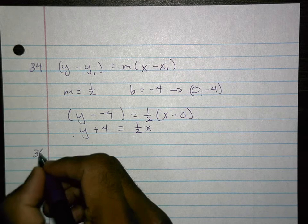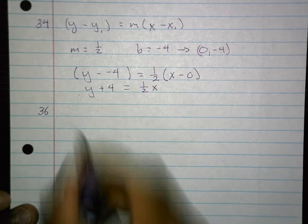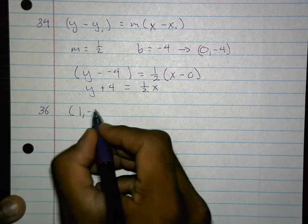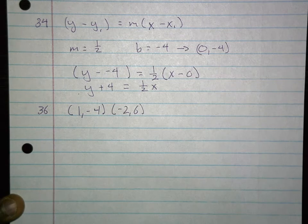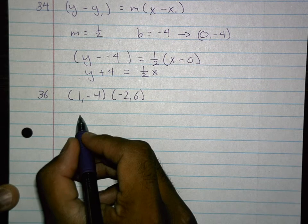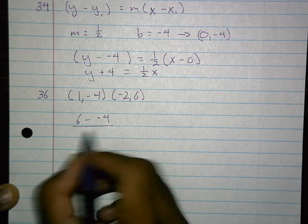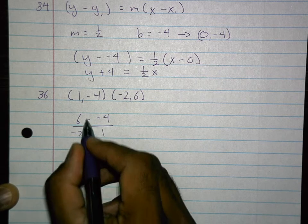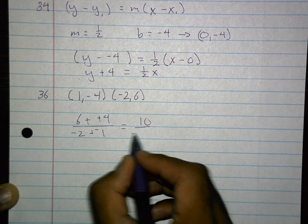36. Same thing here. They're giving me two points (1, -4) and (-2, 6). So we have to create our slope here, looking at finding slope first. So 6 minus negative 4 and then negative 2 minus 1. I'm looking at 10 over negative 3.